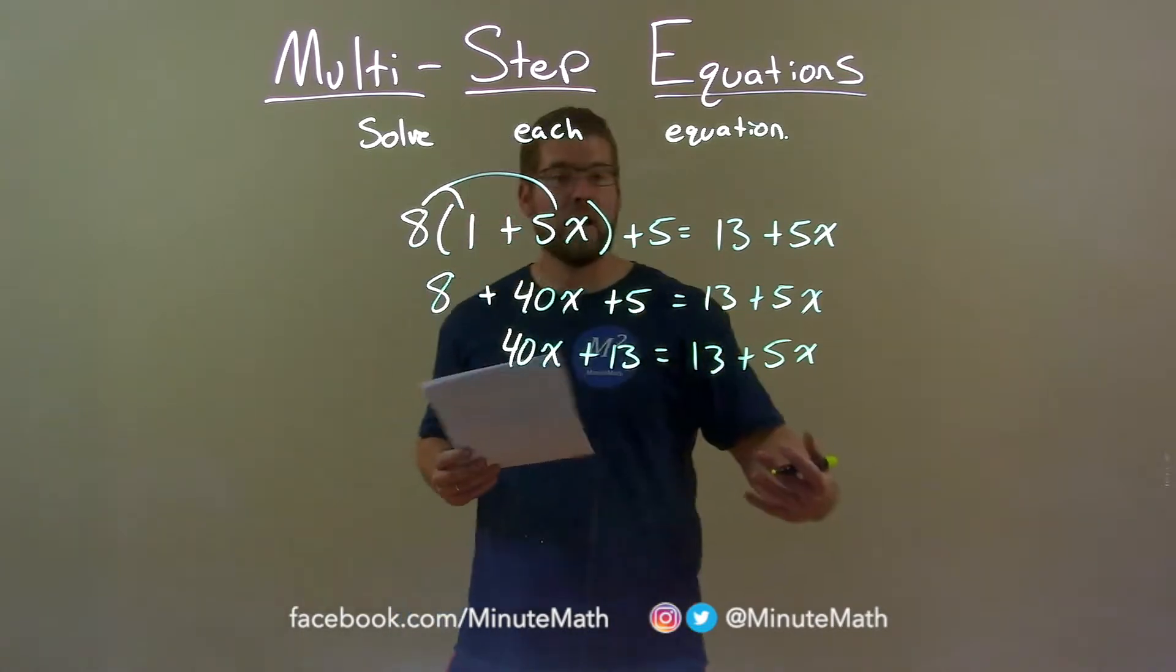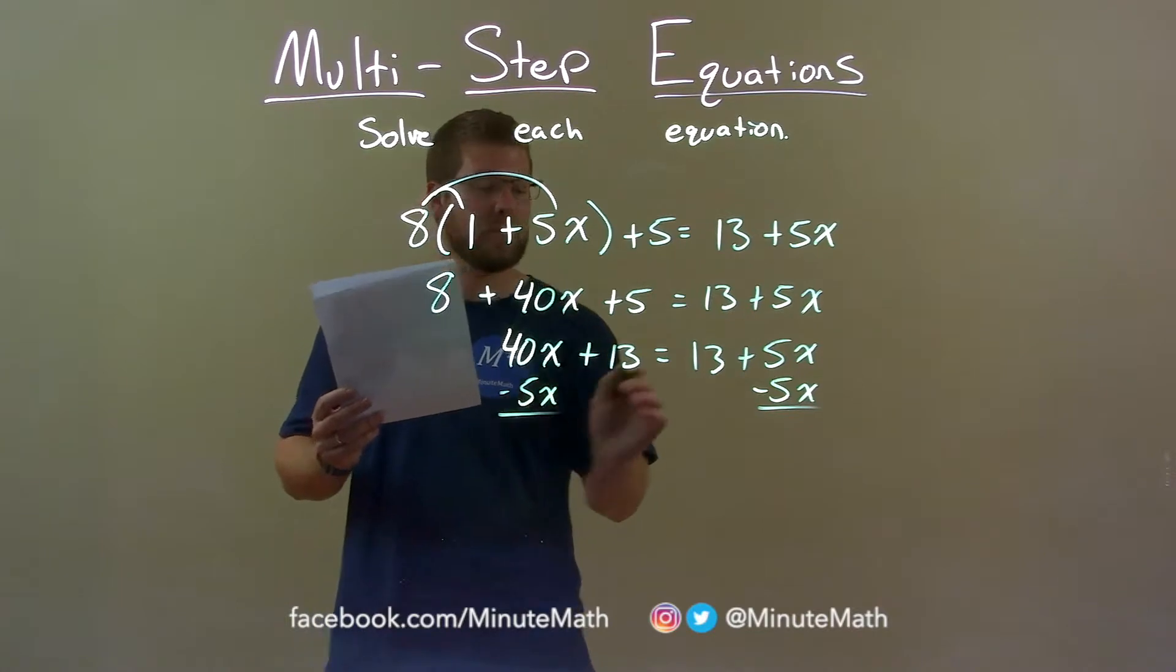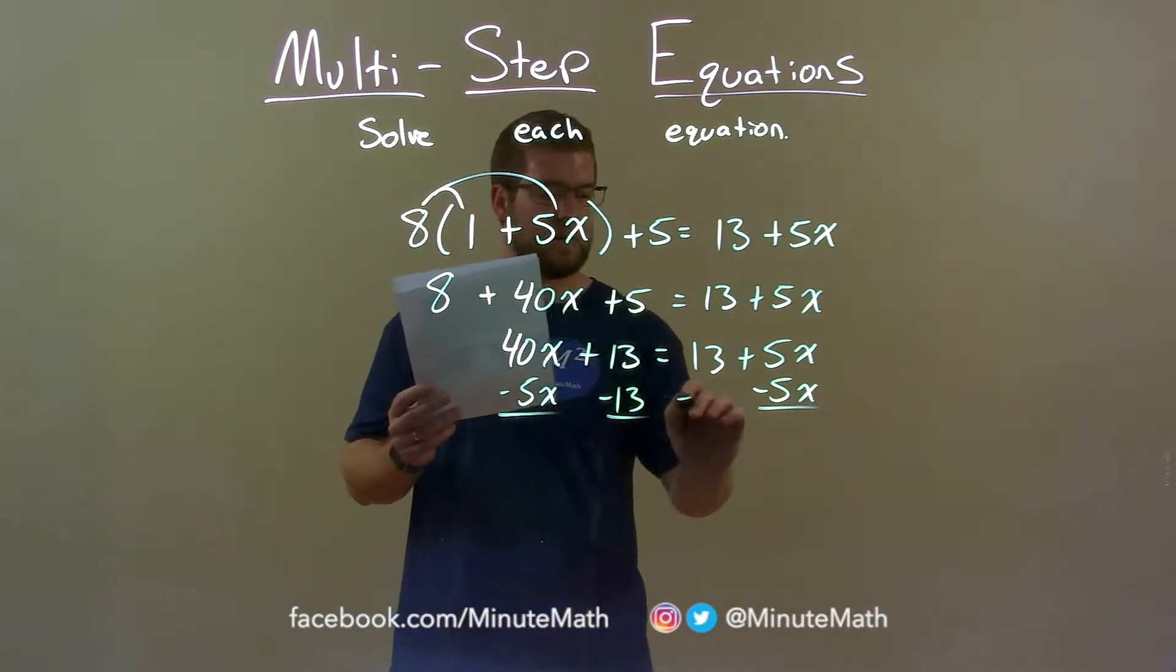All right, let's bring our variables now to the left. So I subtract 5x to both sides and let's bring our numbers to the right. Subtract 13 to both sides.